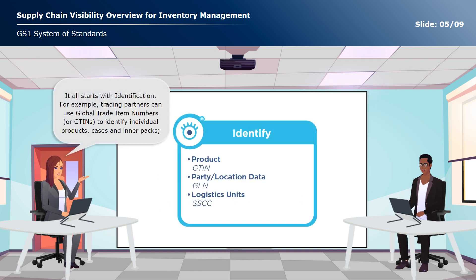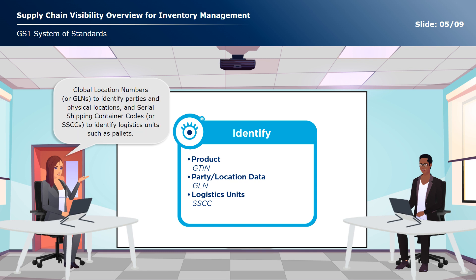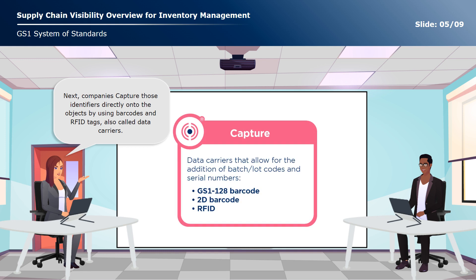It all starts with identification. Trading partners can use Global Trade Item Numbers, or GTINs, to identify individual products, cases, and innerpacks; Global Location Numbers, or GLNs, to identify parties and physical locations; and Serial Shipping Container Codes, or SSCCs, to identify logistics units such as pallets. Next, companies capture those identifiers directly onto the objects by using barcodes and RFID tags, also called data carriers.